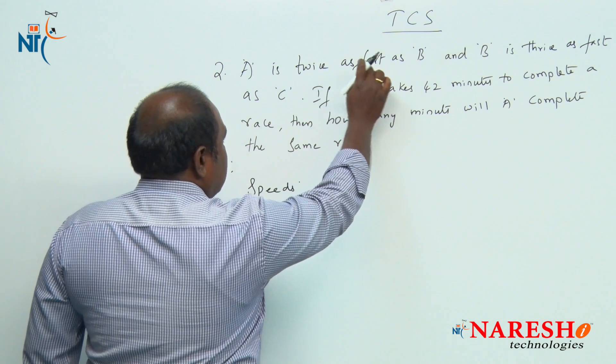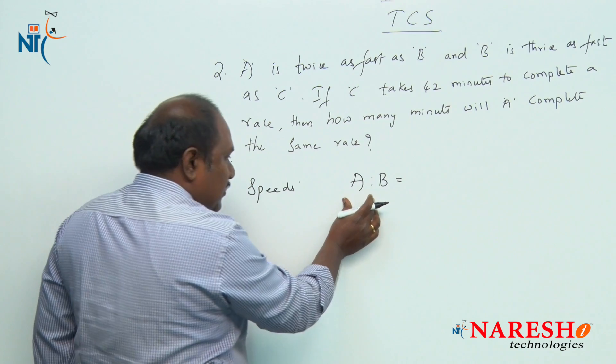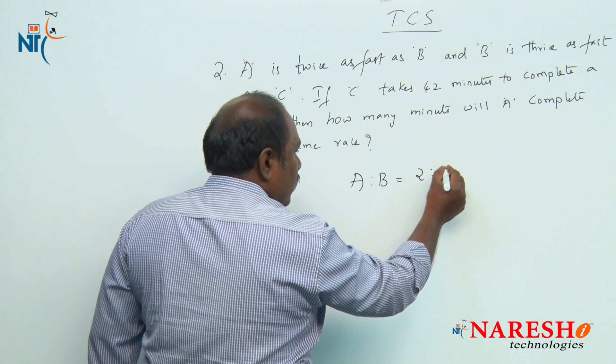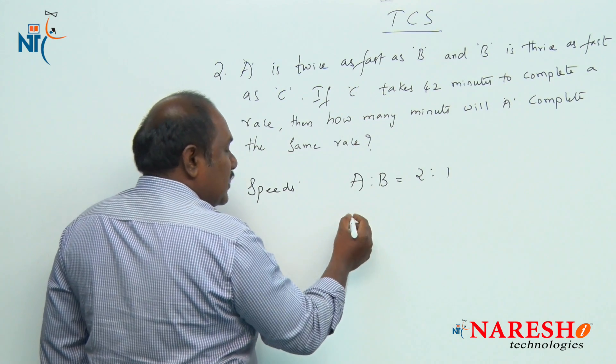It is given A is twice as fast as B. If I solve it by ratios, I say the speeds of A and B are in the ratio of 2 is to 1, and B is thrice as fast as C.